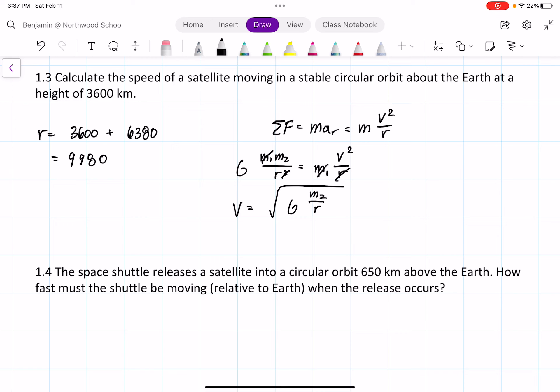In this case, m₂ is the mass of the Earth, and r is the radius we determined. Plugging in the values: G is 6.67 × 10⁻¹¹, mass is 5.98 × 10²⁴, and r is 9,980 × 10³ to convert to meters. This gives us a velocity of 6,322 meters per second.